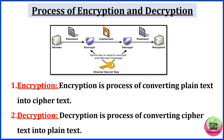Now, see this image. You can pause the video and go through it — you will clearly understand how this process takes place. The sender sends plain text, which is encrypted into cipher text. Then the recipient decrypts it into plain text using the secret key. So, encryption is a process of converting plain text into cipher text, and decryption is a process of converting cipher text into plain text.